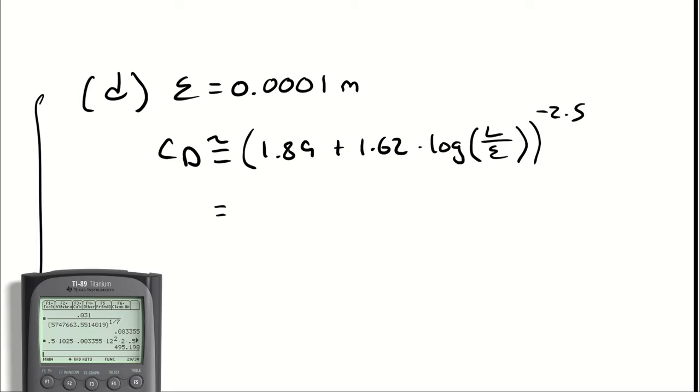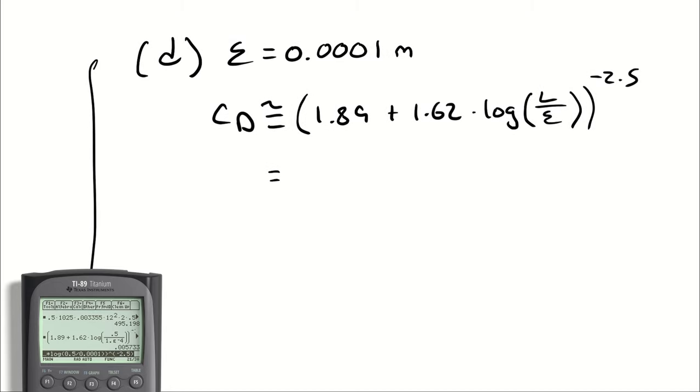So calculator, we're going to take 1.89 plus 1.62 times log base 10 of the length of our plate, which was 0.5 meters, divided by our roughness value, which is 0.0001 meters, and then we are taking that entire quantity to the power of negative 2.5. I have to use a negative sign instead of a subtraction sign, or my calculator will get mad. We get a coefficient of drag of 0.005733.